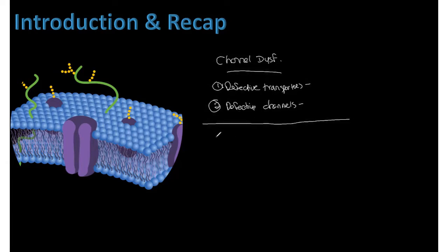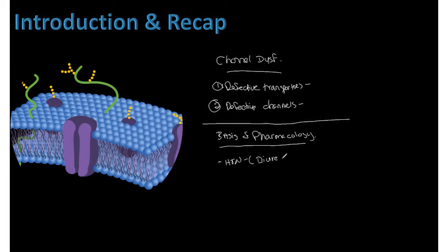Another major aspect of these channels is pharmacology — a huge part of what you'll learn next semester. Many drugs act on channels to get into cells. Things like antihypertensives, diuretics, and stomach ulcer treatments like proton pump inhibitors are all examples. All of these affect one of the channels we're going to talk about.